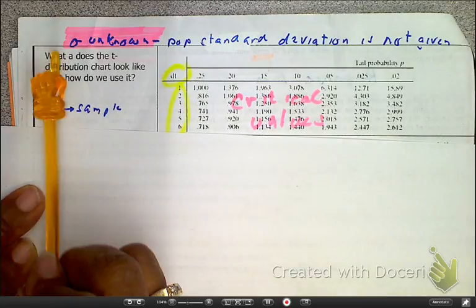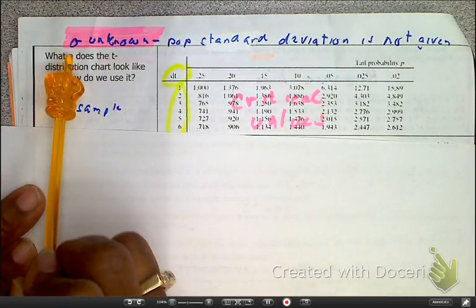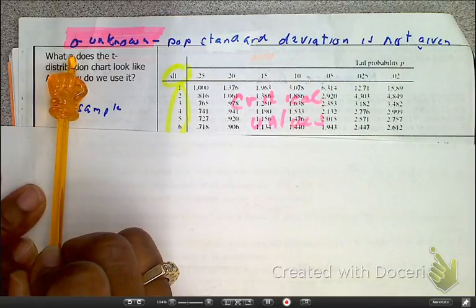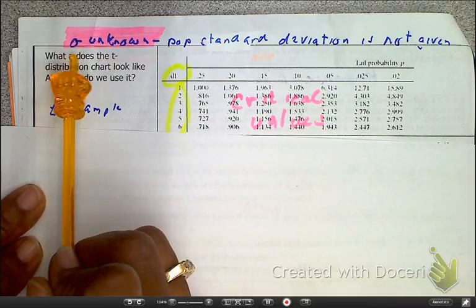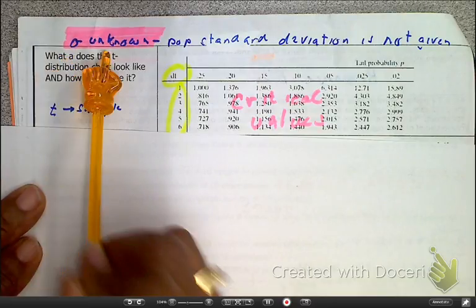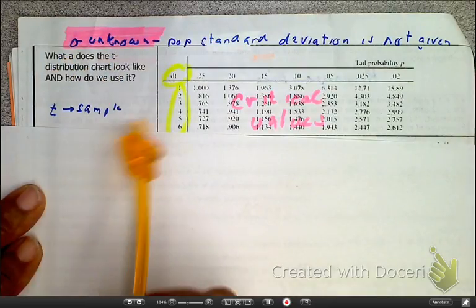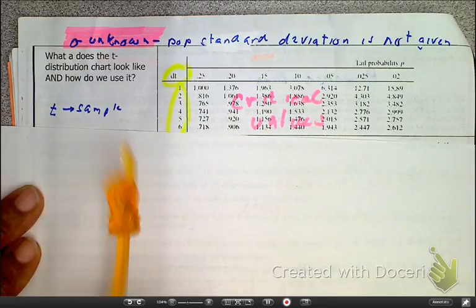But for now, the reality is, if sigma is given, T is not even an option. We shouldn't even consider those other things. But when sigma is unknown, yes, we can possibly use the T distribution.